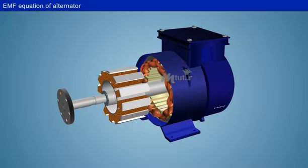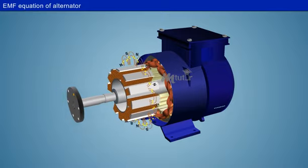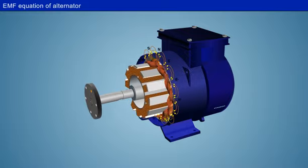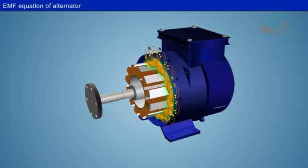In an alternator, the rotor poles rotate and hence their fluxes are cut by the armature windings in the stator, inducing an EMF in them. This induced EMF in the stator coils can be determined with the help of an EMF equation.